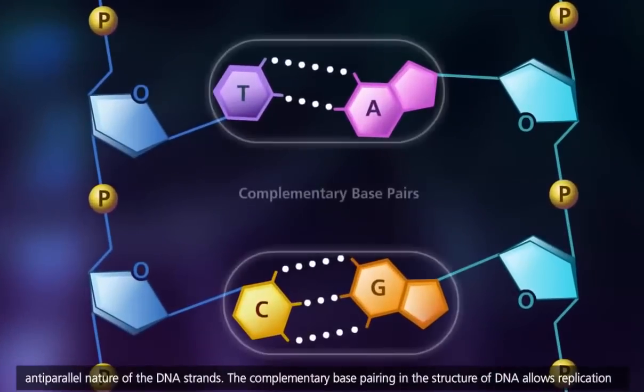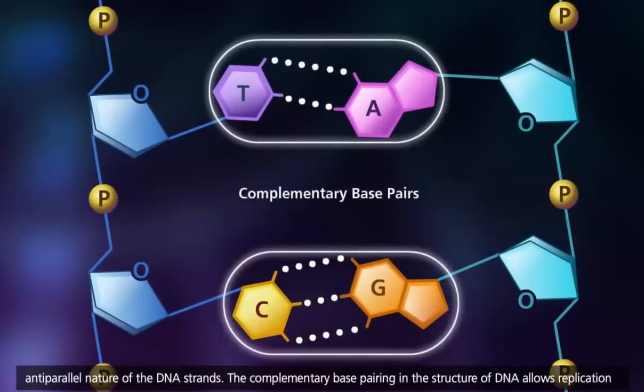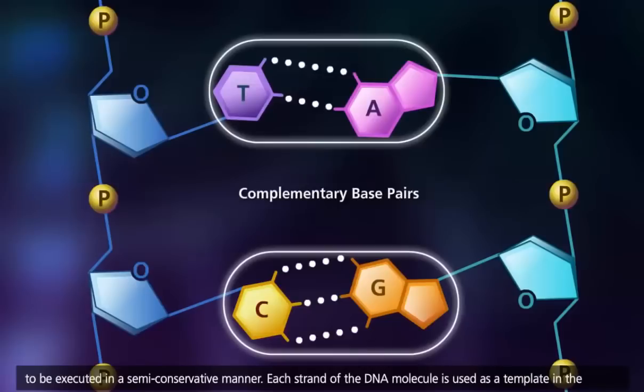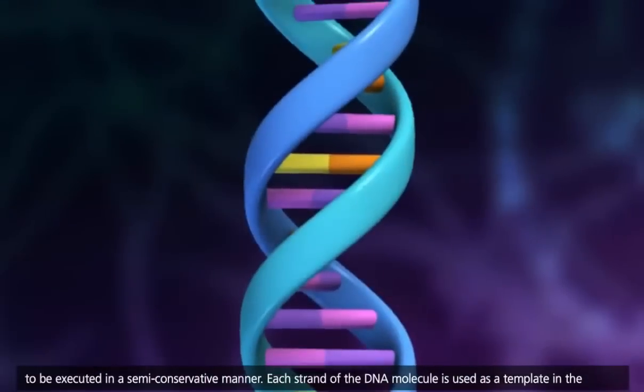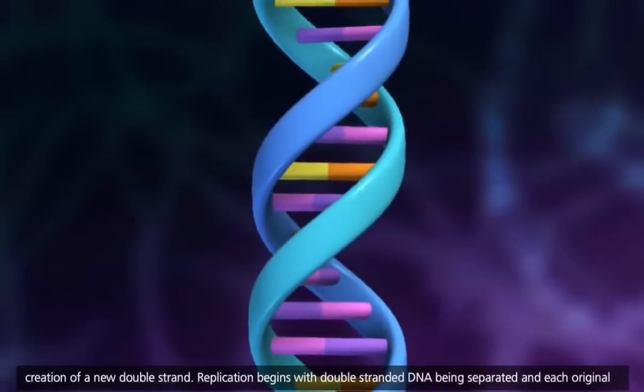The complementary base pairing in the structure of DNA allows replication to be executed in a semi-conservative manner. Each strand of the DNA molecule is used as a template in the creation of a new double strand.